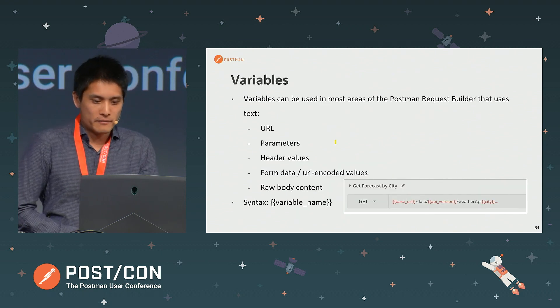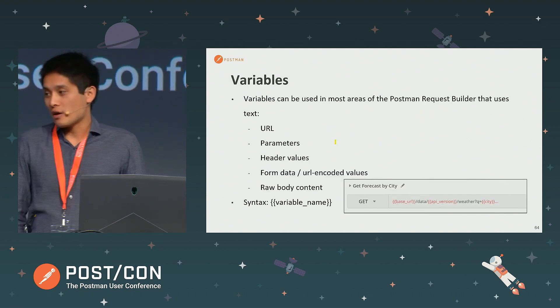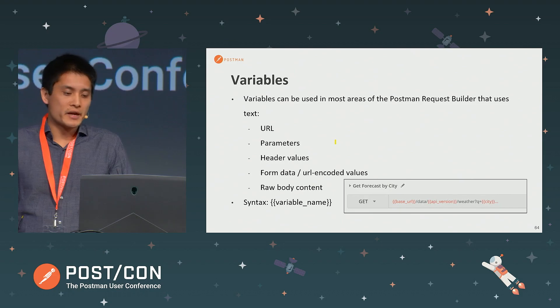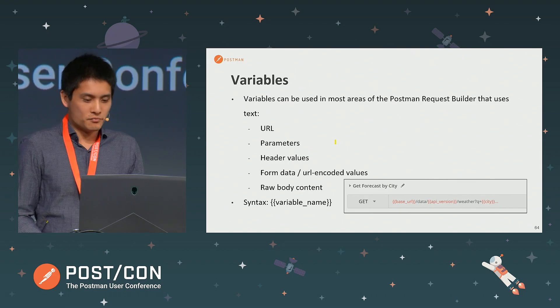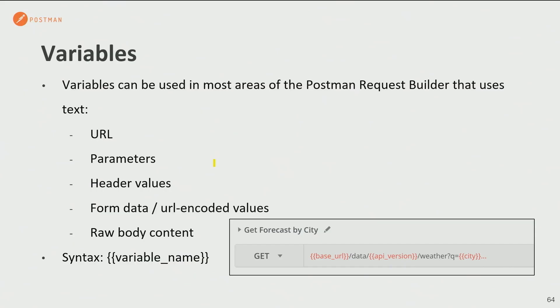Variables can be used in most areas of our request builder that use text — your URL, your parameters, your header values, your form data, and raw body content. All those areas we can use variables. Here is an example of using variables within the request URL.